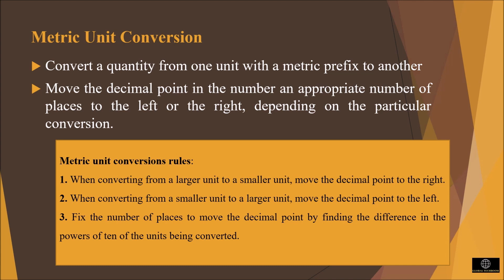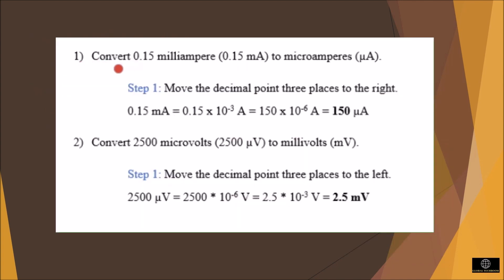To find the number of places to move the decimal point, find the difference in the powers of 10 of the units being converted. Consider the problem: convert 0.15 milliampere to microampere. Milliampere is 10⁻³ and microampere is 10⁻⁶. We write 0.15 × 10⁻³ A, then move the decimal point three places to the right to get 150 × 10⁻⁶ A. Since 10⁻⁶ is micro, the answer is 150 microampere.